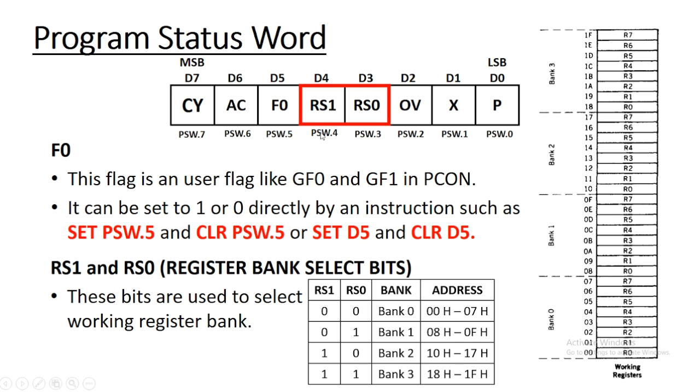Another two bits are RS1 and RS0. These are the register bank select bits. We know 8051 is having 4 register banks: bank 0, bank 1, bank 2, and bank 3.